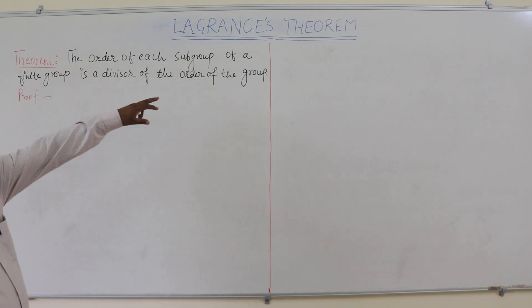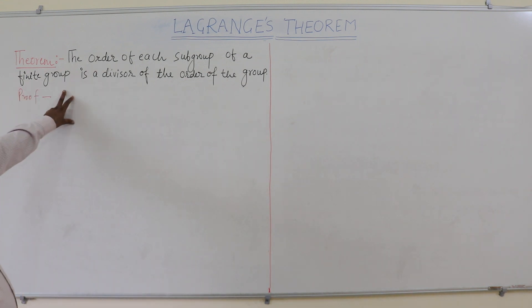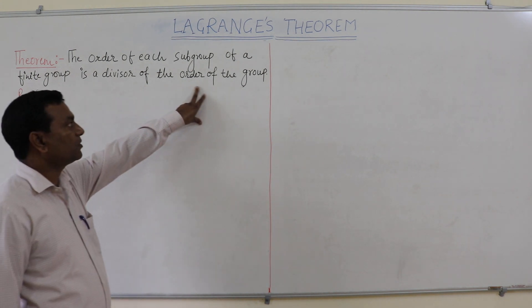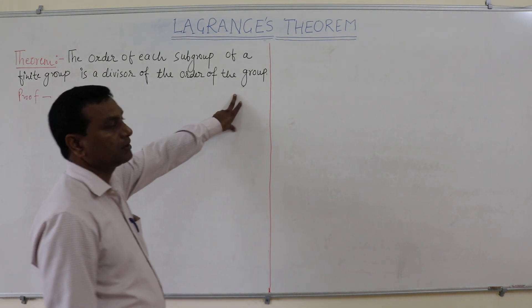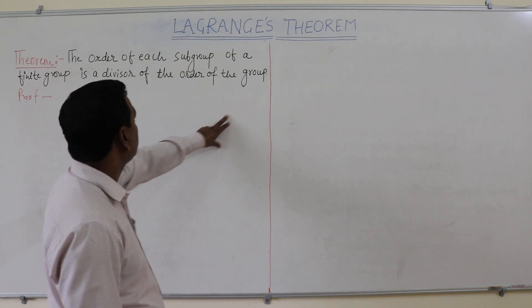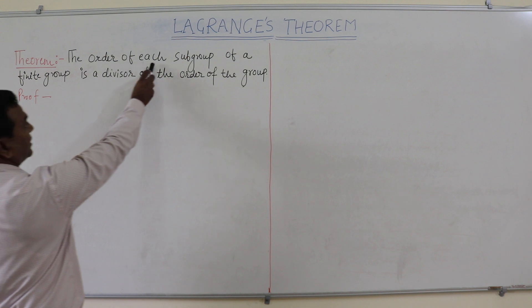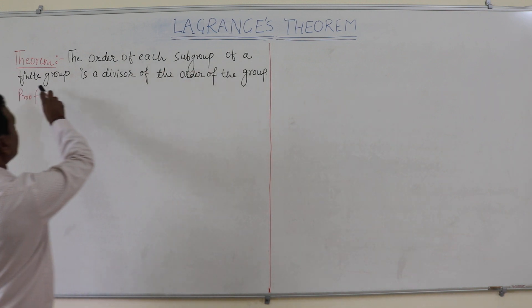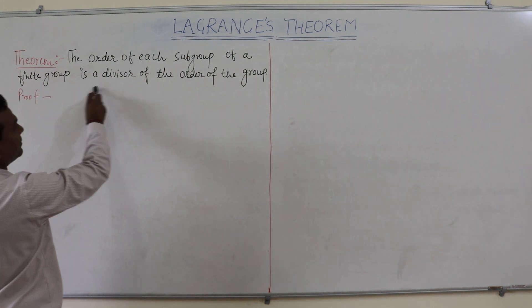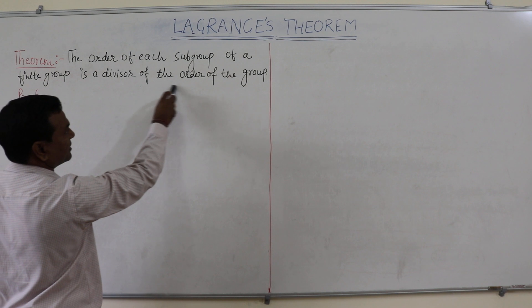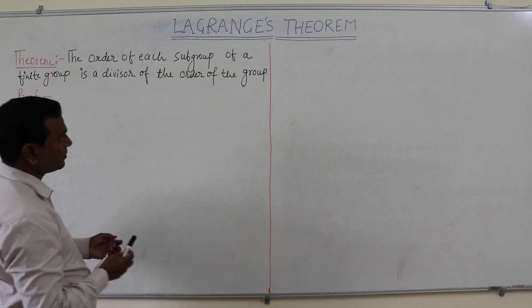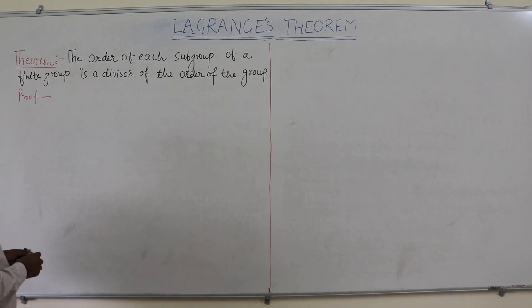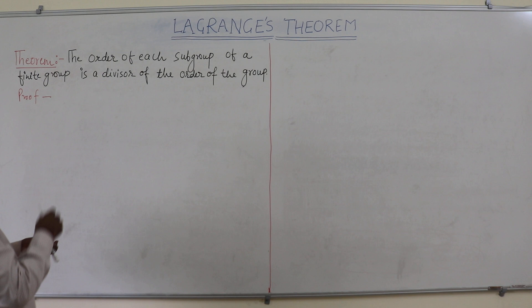The order of each subgroup of a finite group is a divisor of the order of the group. Now let us see the proof of this theorem.